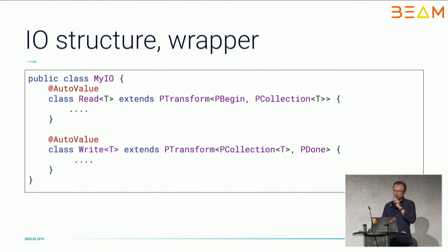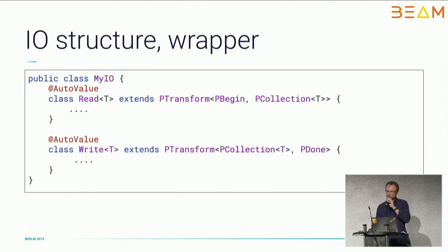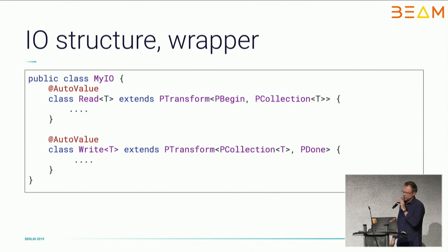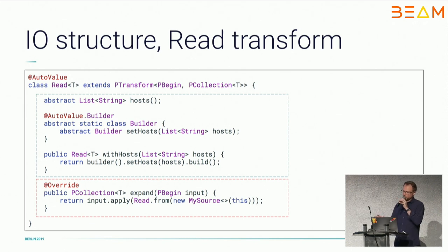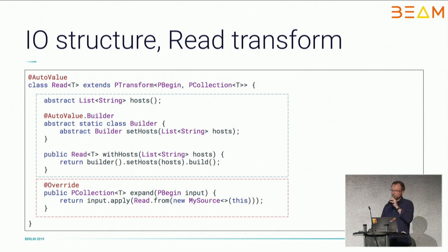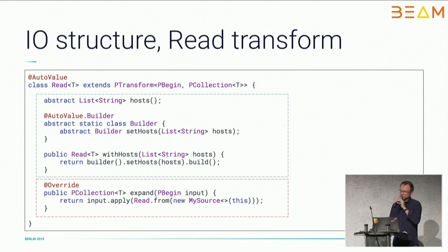Generally, all connectors are presented as a wrapper around a set of different transforms. In this example I added two transforms: one to read and one to write data. The difference is the input and output parameters of the PTransforms — for read we use a begin input and output a PCollection of our elements, and for write it's the opposite: we take the input PCollection and output a PDone object. The read transform incorporates two parts. The first is the configuration part, where we use AutoValue and AutoValue builder, which makes it easy to add configuration parameters. For example, here we configure hosts and expose public methods as part of our API.